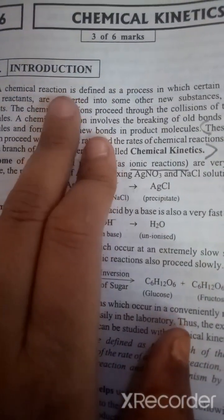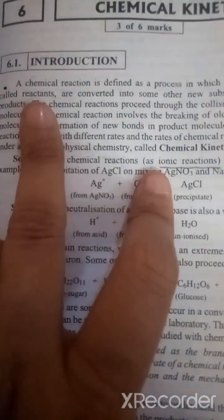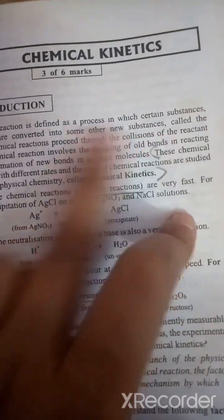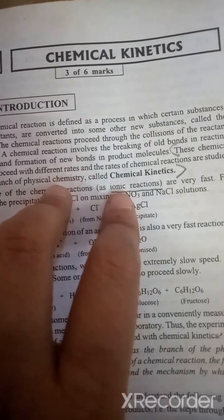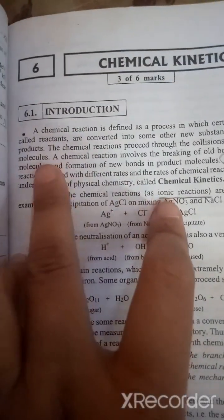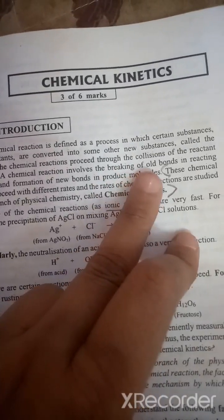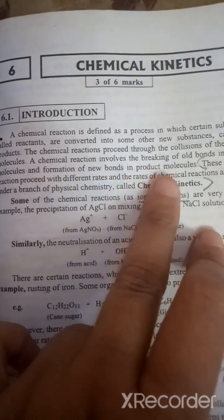Listen to this, Chemical Reaction. We call it a process in which certain substances called reactants are converted into some other new substances called the products. Chemical reaction proceeds through the collisions of the reactant molecules. Chemical reaction involves the breaking of old bonds in reactant molecules and formation of new bonds in product molecules.